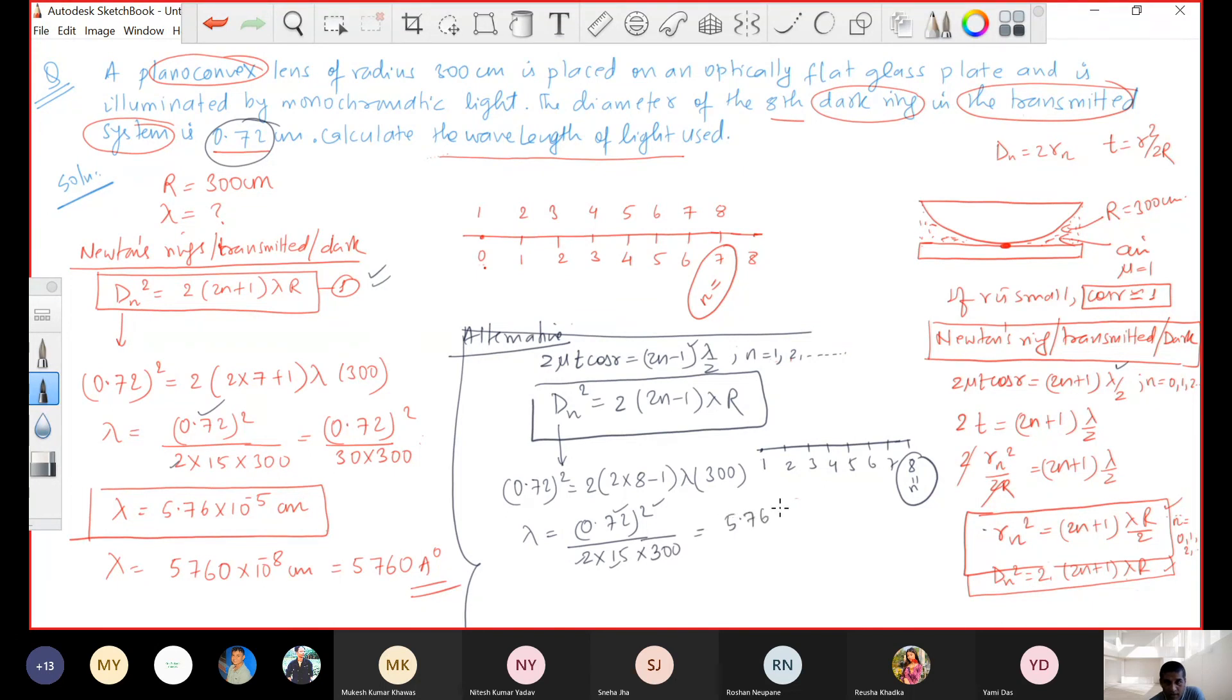5.76 times 10 to the power minus 5 centimeter. Finally, 5760 times 10 to the power minus 8. We can write this in Armstrong. So we get this.